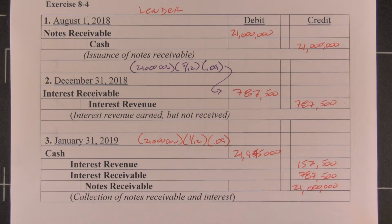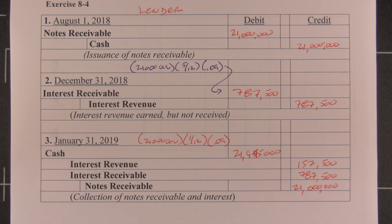This problem, in conjunction with 8-3, lets you see how the transactions flow between the lender and the borrower, and how the transactions are mirrored from one entity to the other.